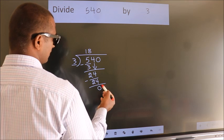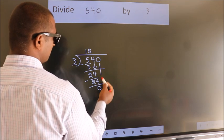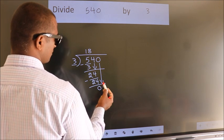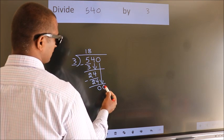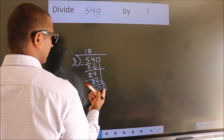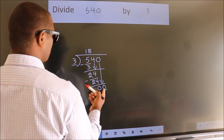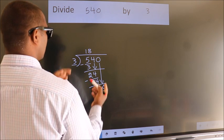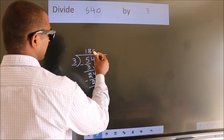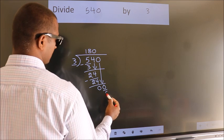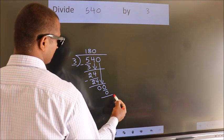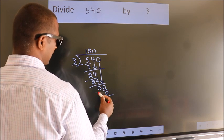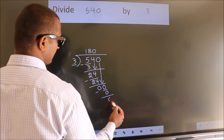After this, bring down the beside number. So 0 down, so 0. When do we get 0 in the 3 table? 3 times 0 is 0. Now we subtract, we get 0.